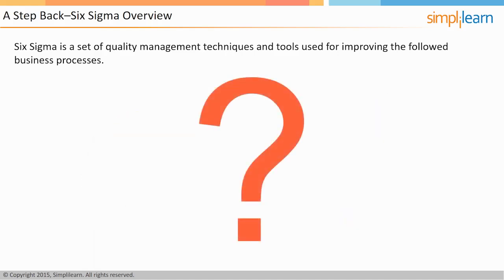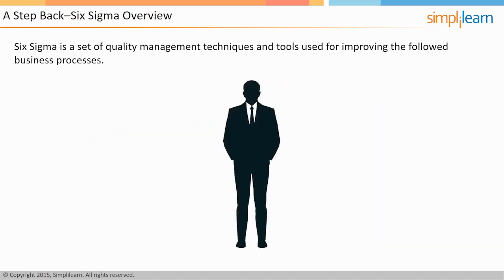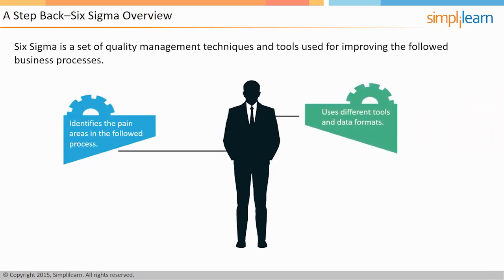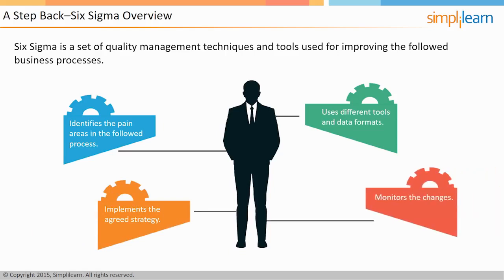So the next question is, what is the role of a professional with a Six Sigma black belt? In simple words, such a professional first identifies the pain areas in the followed process, then uses different tools and data formats to arrive at an optimum solution, implements the agreed strategy, and most importantly, monitors the changes.